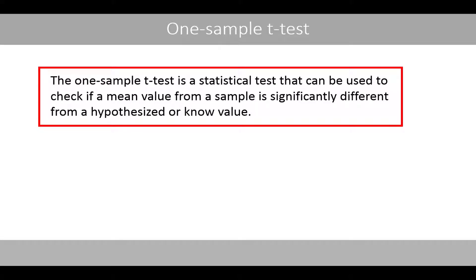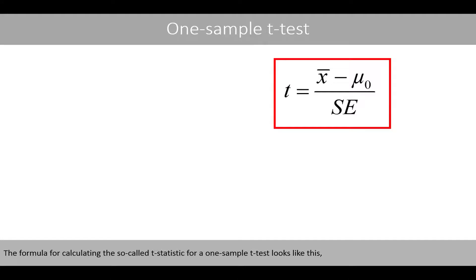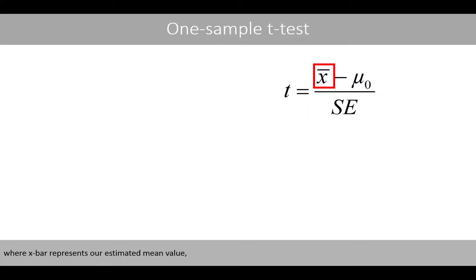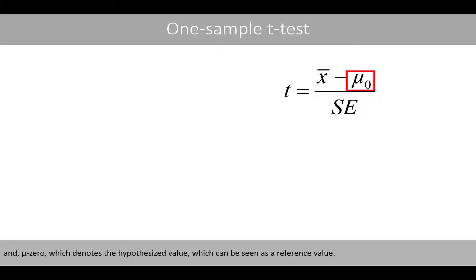The one-sample t-test is a statistical test that can be used to check if the mean value from a sample is significantly different from a hypothesized or known value. The formula for calculating the so-called t-statistic for a one-sample t-test looks like this, where x-bar represents our estimated mean value, SE the standard error of the mean, and mu-zero which denotes the hypothesized value, which can be seen as a reference value.